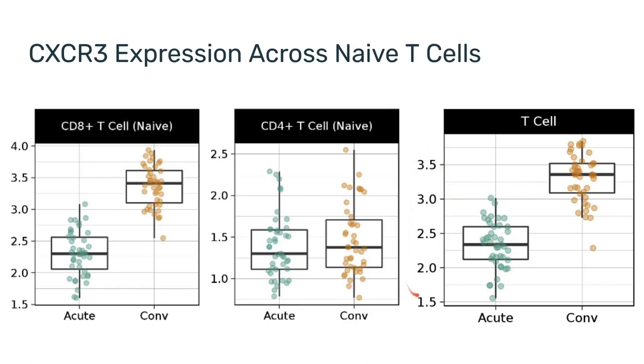Additionally, the absolute values are concordant with the naive CD8+ T-cells. You'll notice that the values here are lower. So this is the overall trend, and this is what I expected from the memory T-cells.